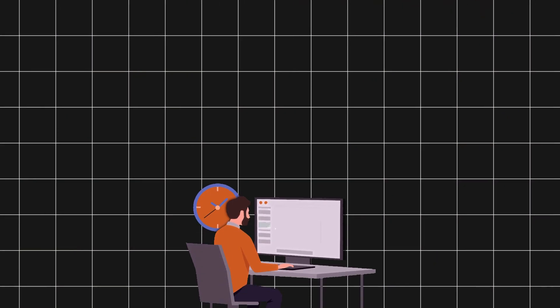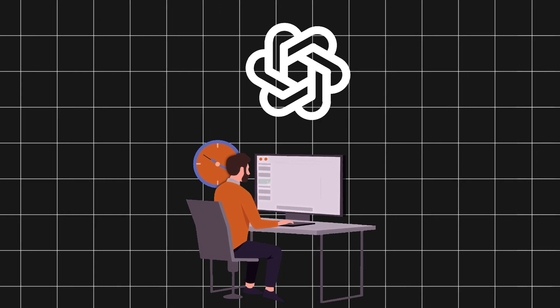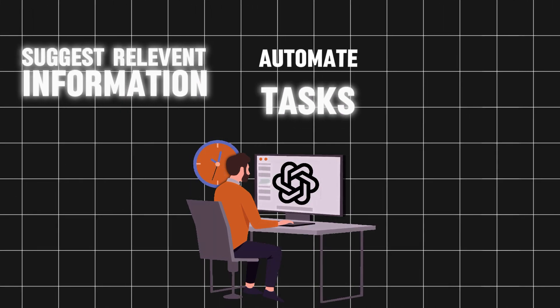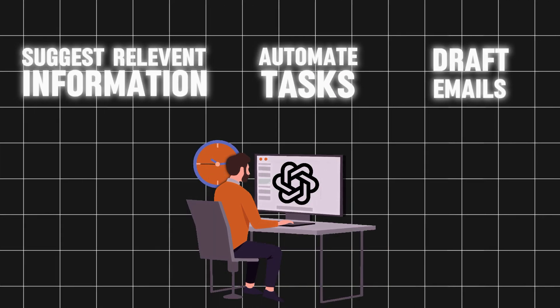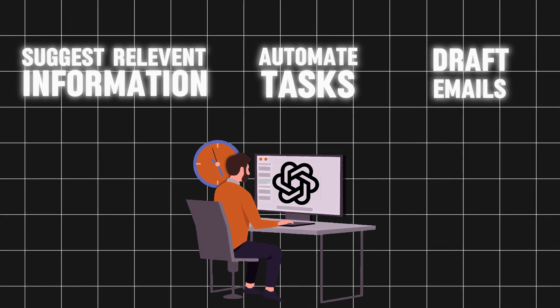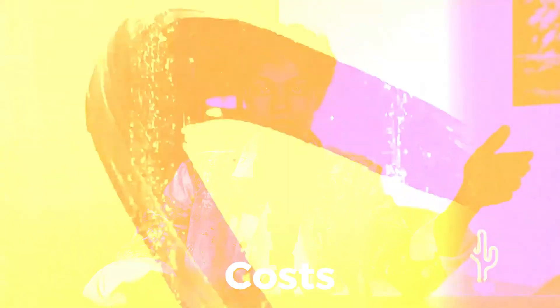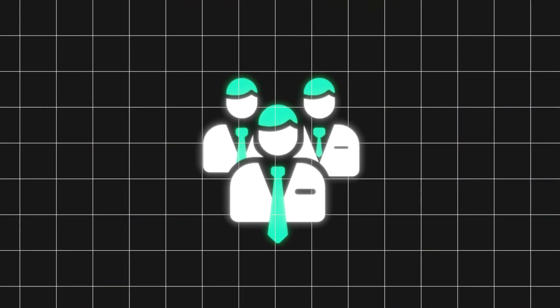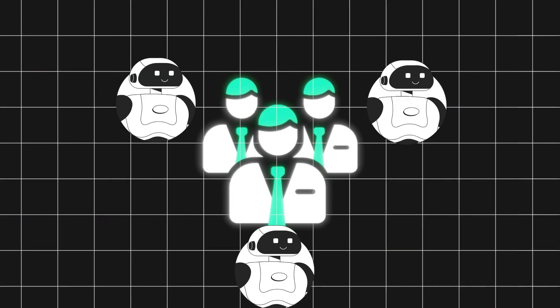For example, if you are working on a project, ChatGPT can suggest relevant information, automate repetitive tasks, and even draft emails or documents based on the content you are viewing. This not only boosts productivity by streamlining workflows and reducing the time you spend switching between tasks, but also has the potential to reduce business costs. Each employee can have a personal AI assistant, which can help manage workloads more efficiently, allowing employees to focus more on strategic and creative aspects of their roles.